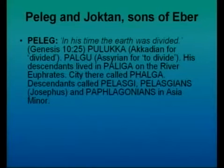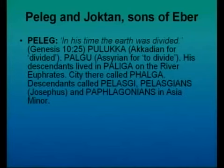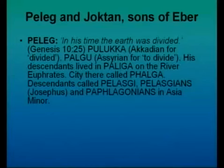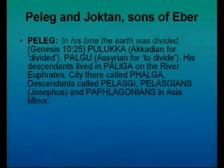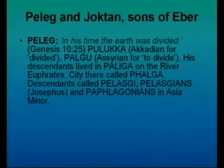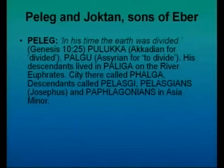Two sons of Eber: Peleg and Joktan. The Bible says in Genesis 10 that in Peleg's time the earth was divided. Most scholars speak about this being the time when tribal groups dispersed. We can actually trace the name Peleg in the Akkadian language — 'divided' in Akkadian is Polaka, while in Assyrian 'to divide' is Palgu. His descendants lived in a place called Paliga on the river Euphrates, and there was a city called Palga, whose descendants were known as the Peleski or Paphragonians, quite well known in Asia Minor — modern-day Turkey. Joktan had 12 sons who basically spread through into the Arabian Peninsula.